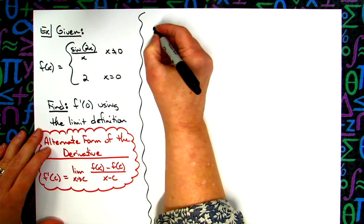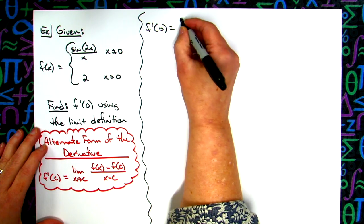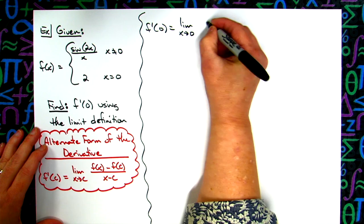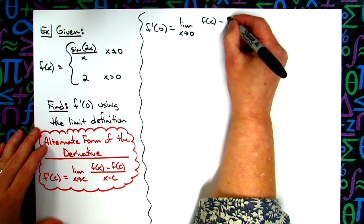So we're going to start here with f prime of 0 is equal to the limit as x approaches 0. We'll have our function minus f of 0, function value at 0.